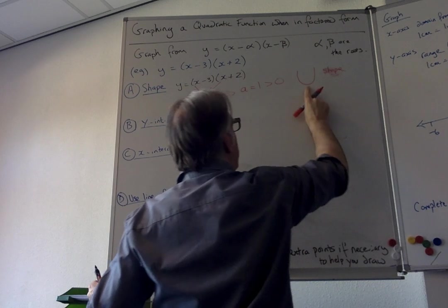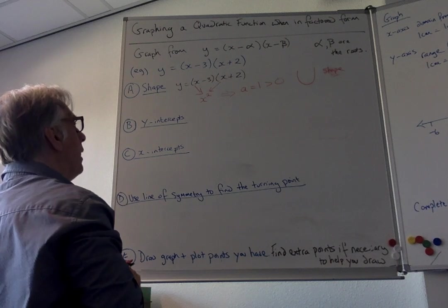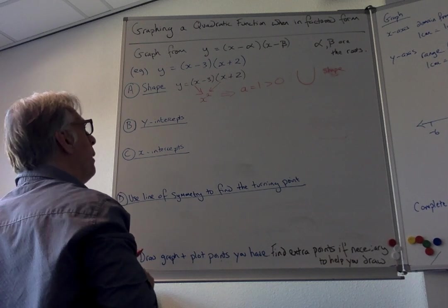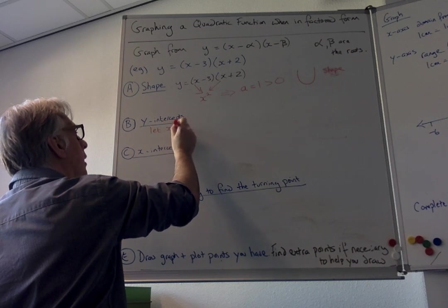So I also know it's going to be a minimum turning point. The next thing that's quite easy to find is the y-intercept. What's special about the y-intercept? It's when we let x equal 0.